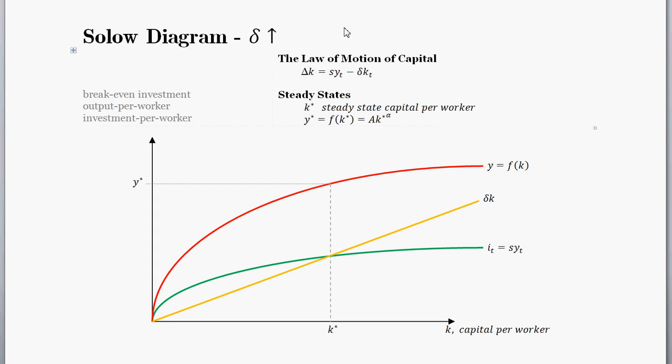To see the effect of a change in delta, the depreciation rate, let's think about the Solow model. What's helpful first is to think about what exogenously could change the depreciation rate. Delta is one of the parameters that's treated as completely exogenous. So what is depreciation?